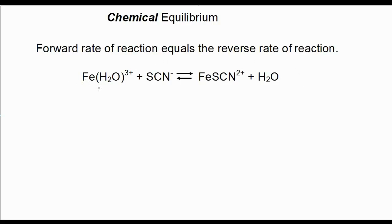It's a reaction between iron and thiocyanate, to make iron thiocyanate and a little bit of water. Now we see two arrows, a forward arrow and a reverse arrow. Well, that means it's a reaction in equilibrium. It also means that the forward rate equals the reverse rate of the reaction.